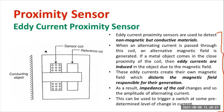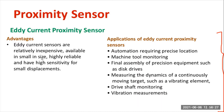The major advantages of eddy current type proximity sensors are: they are cheap, available in small size, reliable, and have very high sensitivity. They can be used for small displacement measurement. Applications include the automation field, machine tool monitoring and assembling, measuring dynamics for moving targets, identifying vibrating elements, and use in automobiles — especially drive shaft monitoring and vibration measurement.